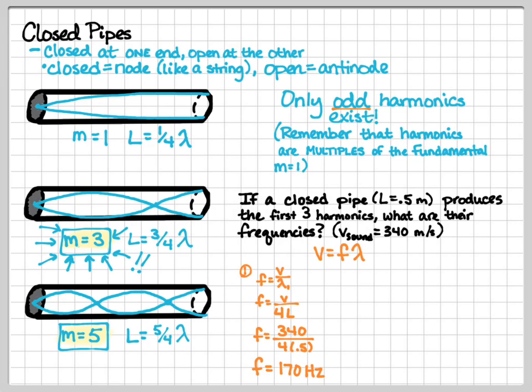For our next harmonic, our third harmonic, we see that L is equal to three-fourths lambda. If we rearrange for lambda, we get lambda is equal to four-thirds L, which is what I have there in the denominator. Plugging in our numbers, we get that the frequency is 510 Hz. And we can do a quick check. If this is the third harmonic, well, 170 times three, yes, it does in fact equal 510, so that checks out.